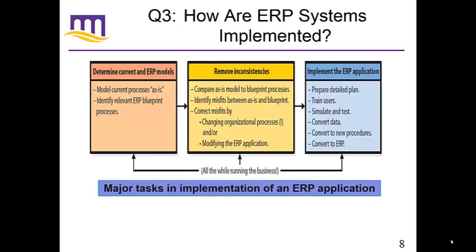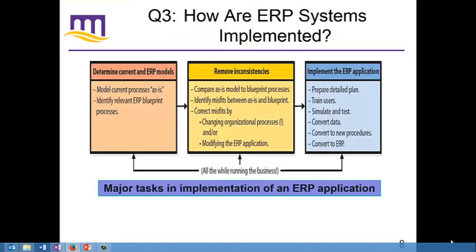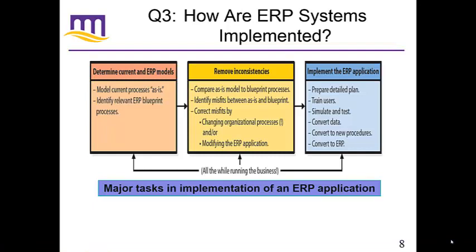How are ERP systems implemented? You start with basically understanding what is currently being done — you have to go through a major review of every current business process as it currently sits. This is a massive undertaking just to identify this. Secondly, you need to determine what the ERP enables you to do. If you talk to different suppliers of ERP systems, they're each going to have a different set of blueprints for the processes, so you need to understand not only your own processes, but also the differences between multiple ERP vendors.